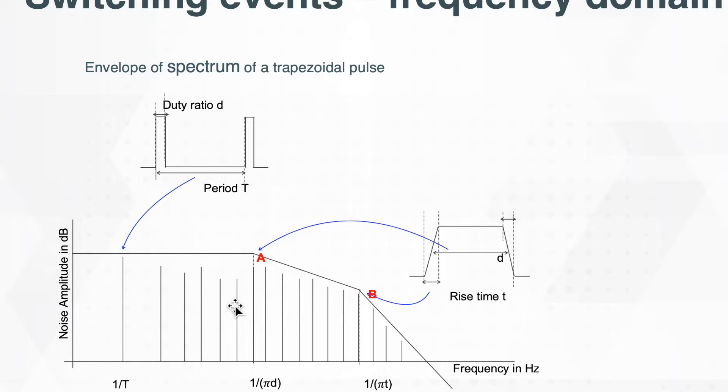All we can see from this diagram is that given a trapezoidal pulse signal, we have a spectrum profile which has two corner points. Corner point A can be calculated by 1 over pi D, where D is the on-time of this pulse, and corner point B is related to the rise and fall time of a pulse. This point can be calculated by 1 over pi T, where T is the rise or fall time of this signal.